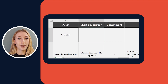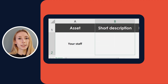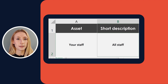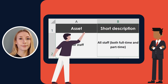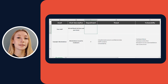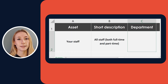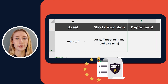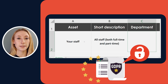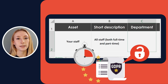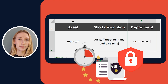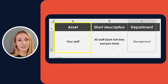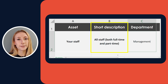Let's go to the short description column. Here you should give each asset a short description. For example, when it comes to staff, you could list employees who work full-time, part-time, or both. In the department column, you define which department is responsible for each asset. This helps prepare your company if there are any issues that have to be fixed, and also enables you to react faster when there is a security risk. When it comes to your staff, management could be responsible for this asset.